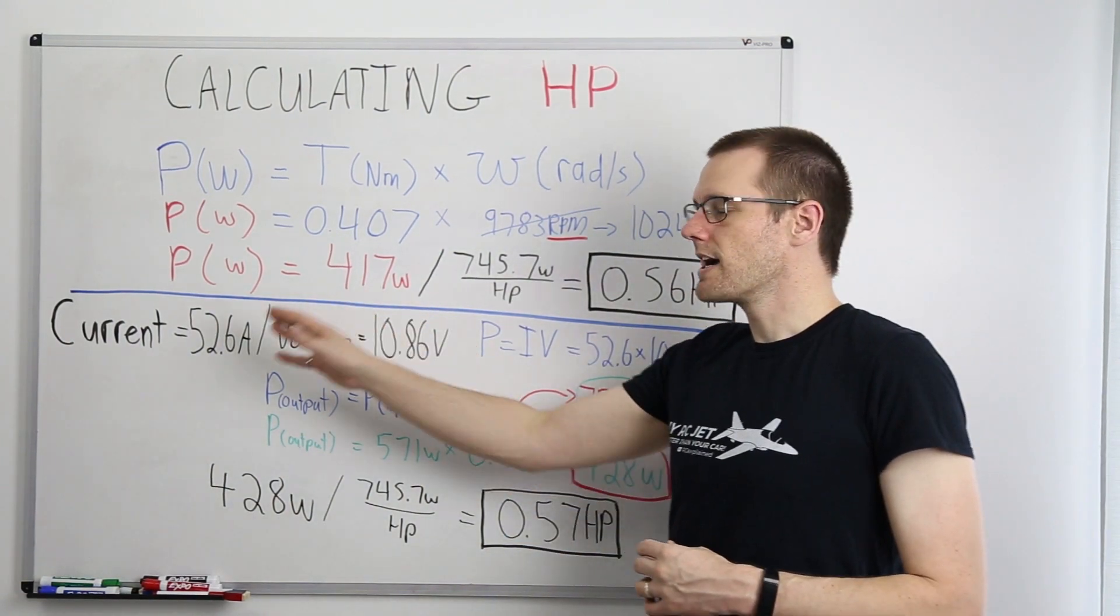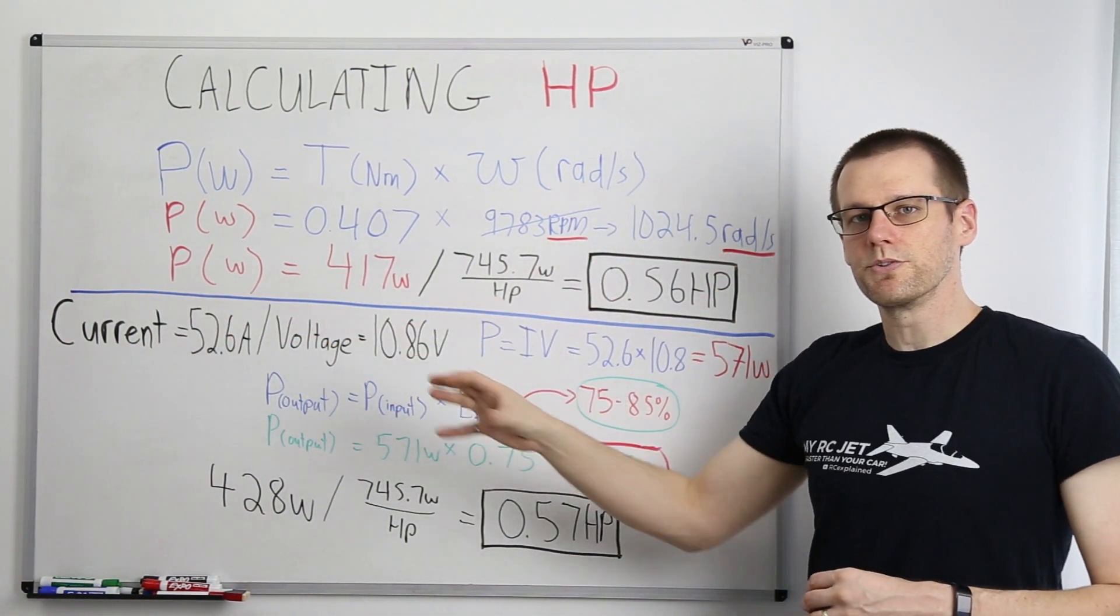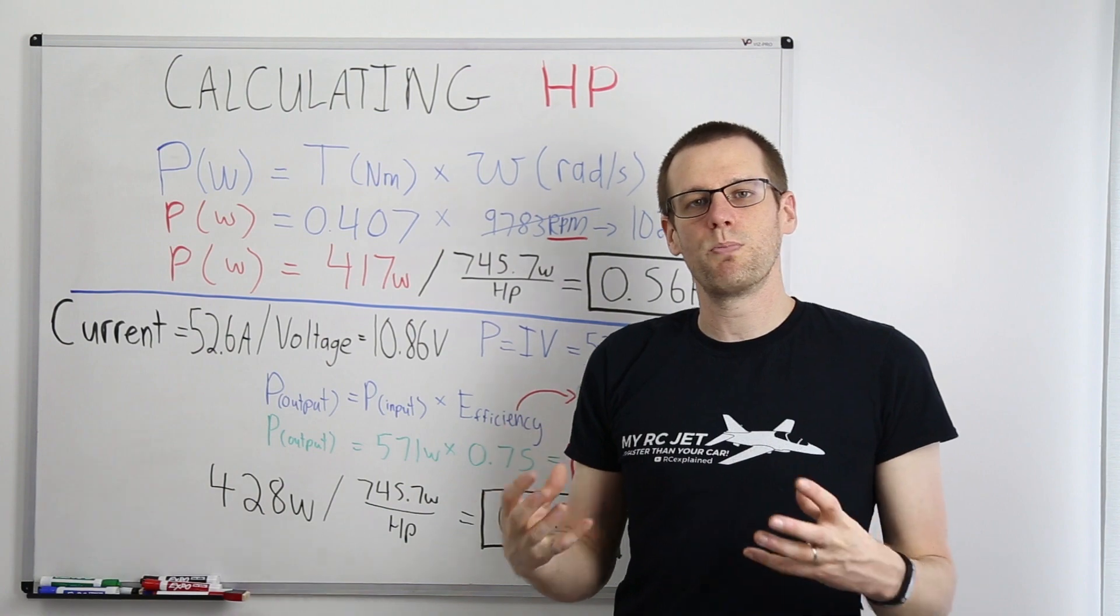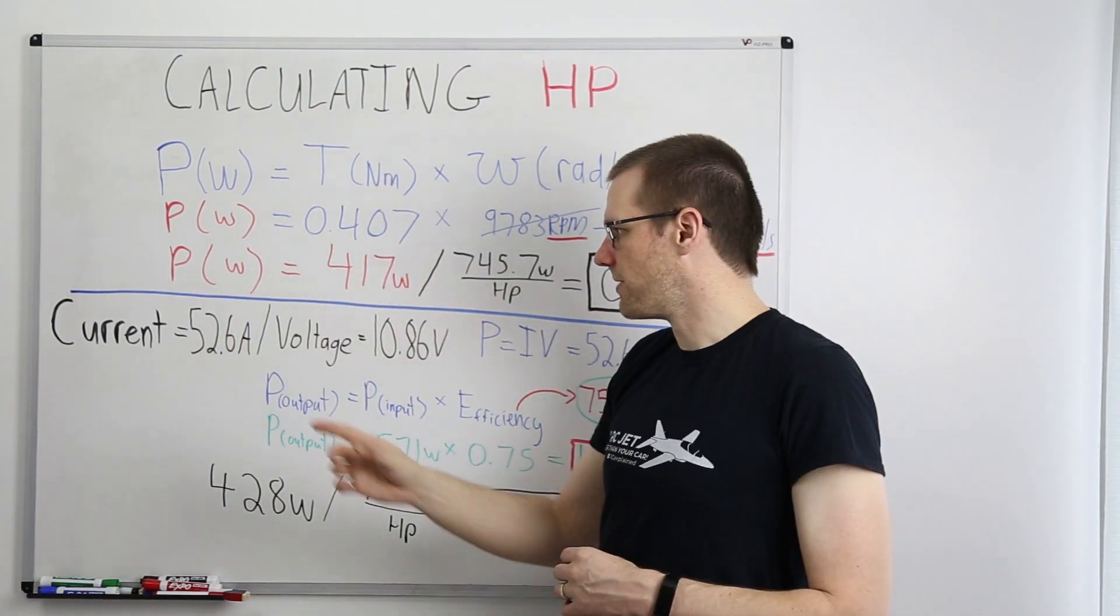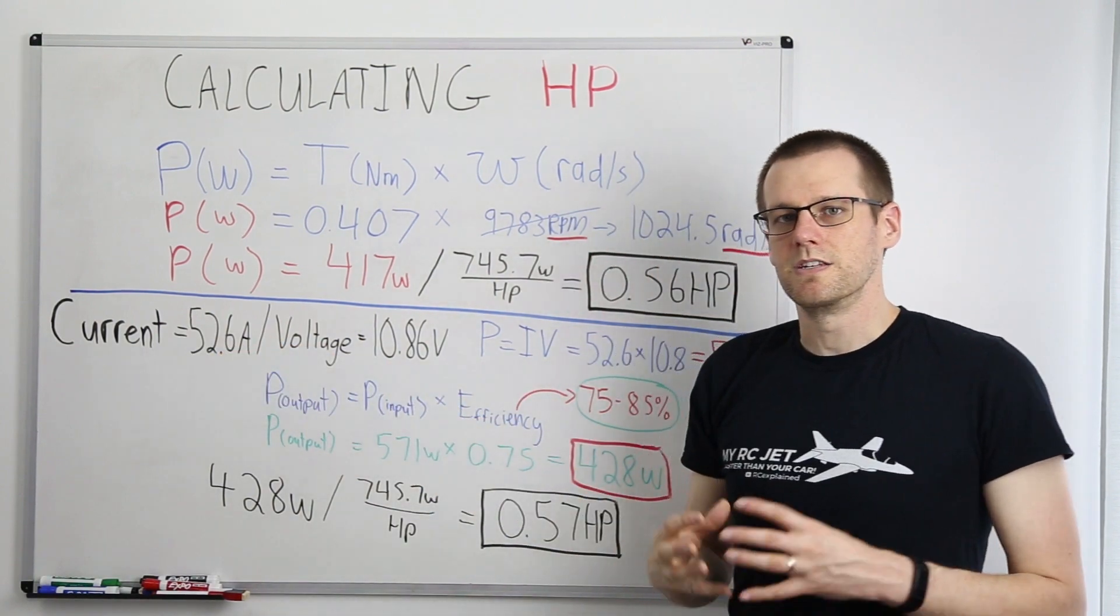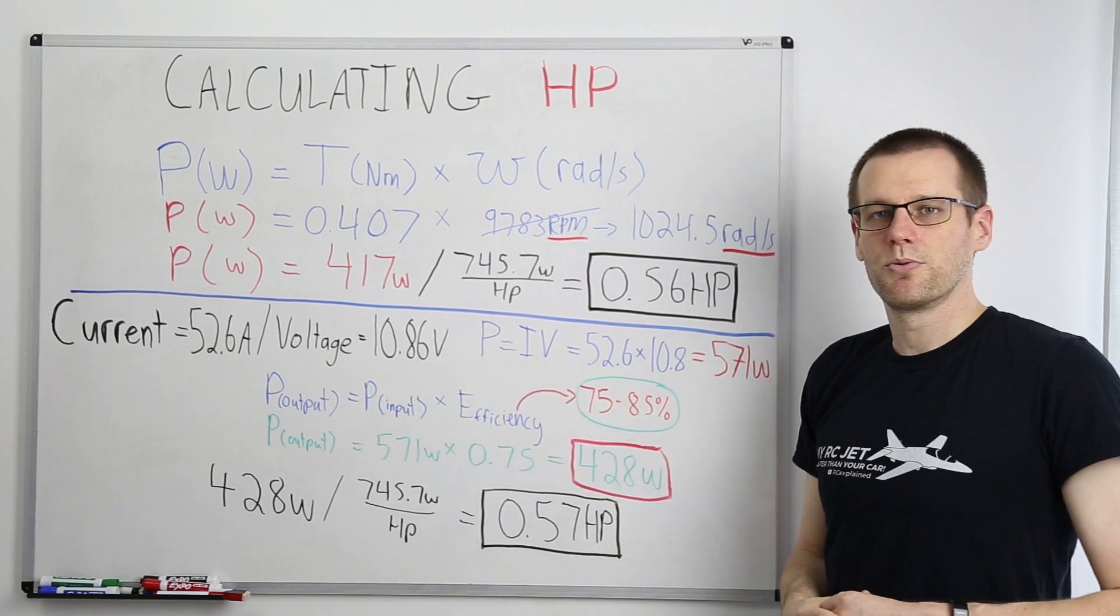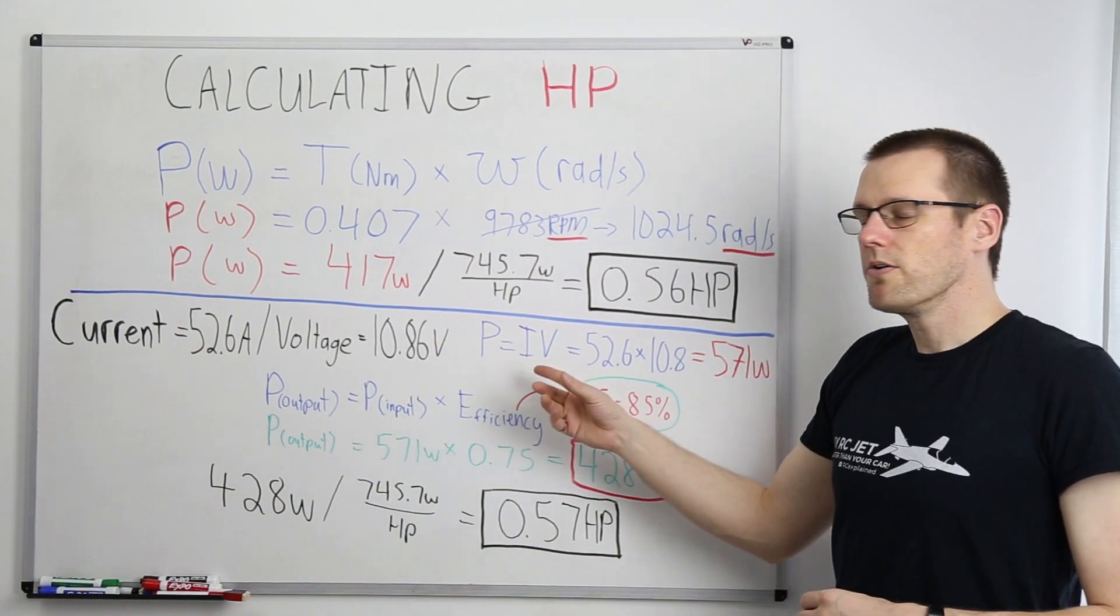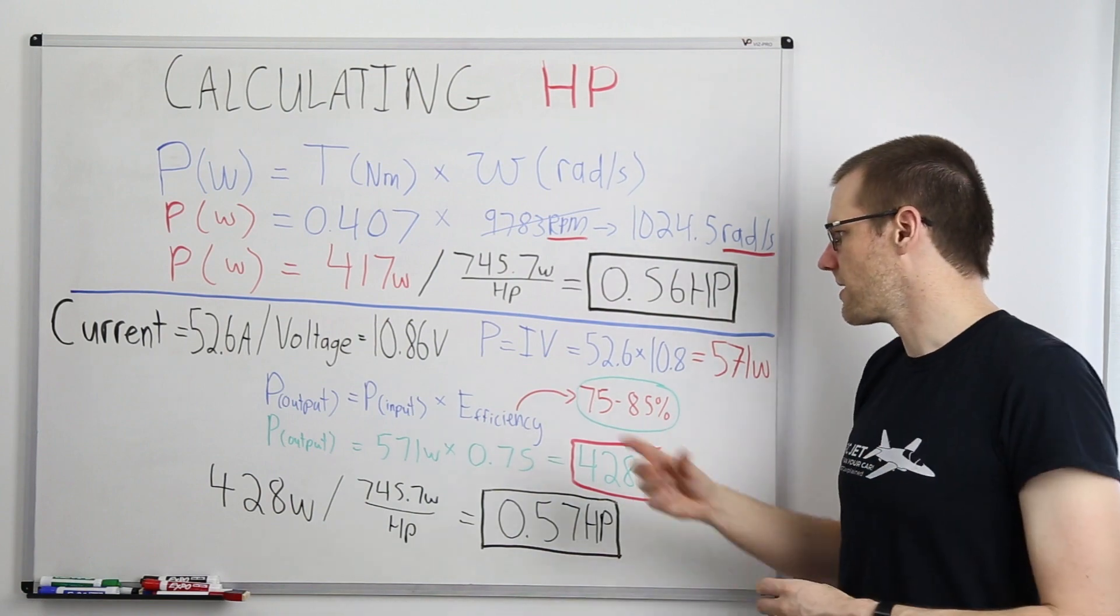So now let's take a look at the second scenario. When we have the current as well as the voltage, we can also calculate the output power of our motor. Our current in this case, same situation, same scenario as above, except now we're looking at the different parameters: 52.6 amps we measured, as well as 10.86 volts. Our power equation is simply the current multiplied by the voltage, in which case we sub those values in.